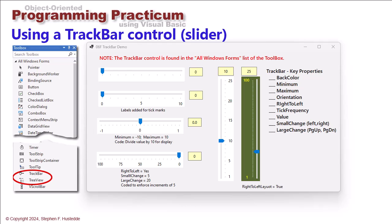If you look at the common controls you won't see it or any of the other subheadings in the toolbox. You've got to look in all windows forms and then you can drag the track bar over.